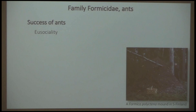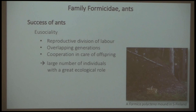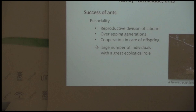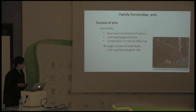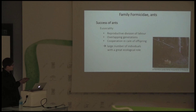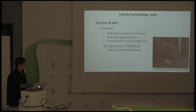Ants can be said to be a successful group — they can be found just about everywhere. Eusociality is really the key trait in this success. Eusociality includes three features: reproductive division of labour, where a group specializes on reproduction and the rest do the colony work; overlapping generations — mother, larvae, and adult workers at the same time in the nest; and cooperative care of offspring. These traits enable colonies to grow really large, sometimes with one to two million workers.